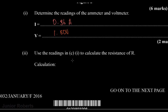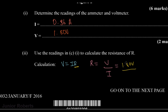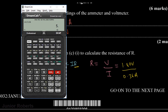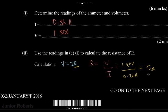Now it says use the readings above to calculate the resistance R. We use Ohm's law, which states V equals I times R. Since we're finding R, we transpose to get R equals V divided by I. Plugging in our values: R equals 1.80 volts divided by 0.36 amperes. Calculating: 1.8 divided by 0.36 gives us a resistance of 5 ohms.